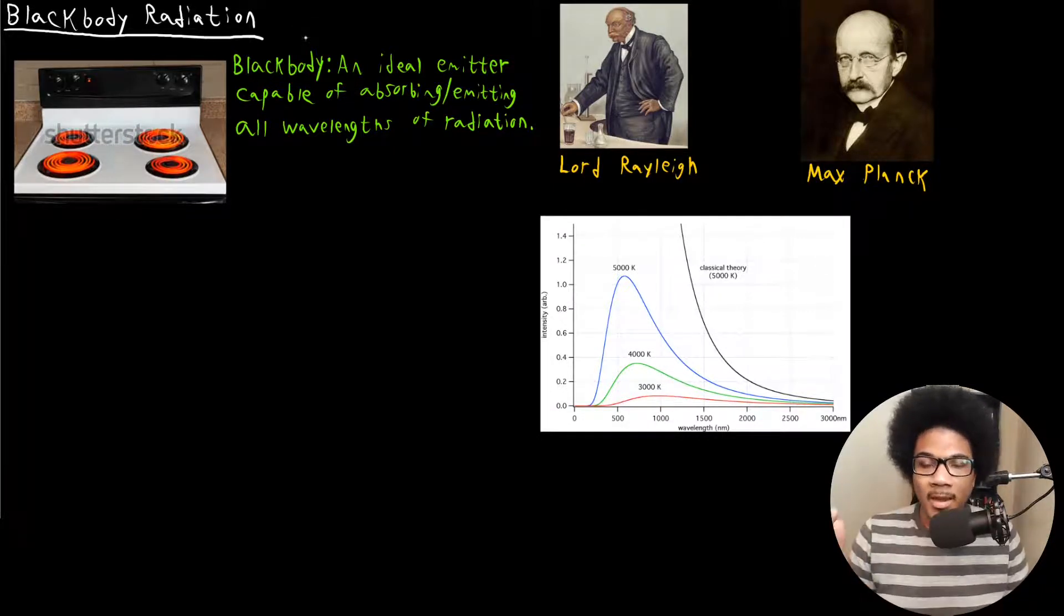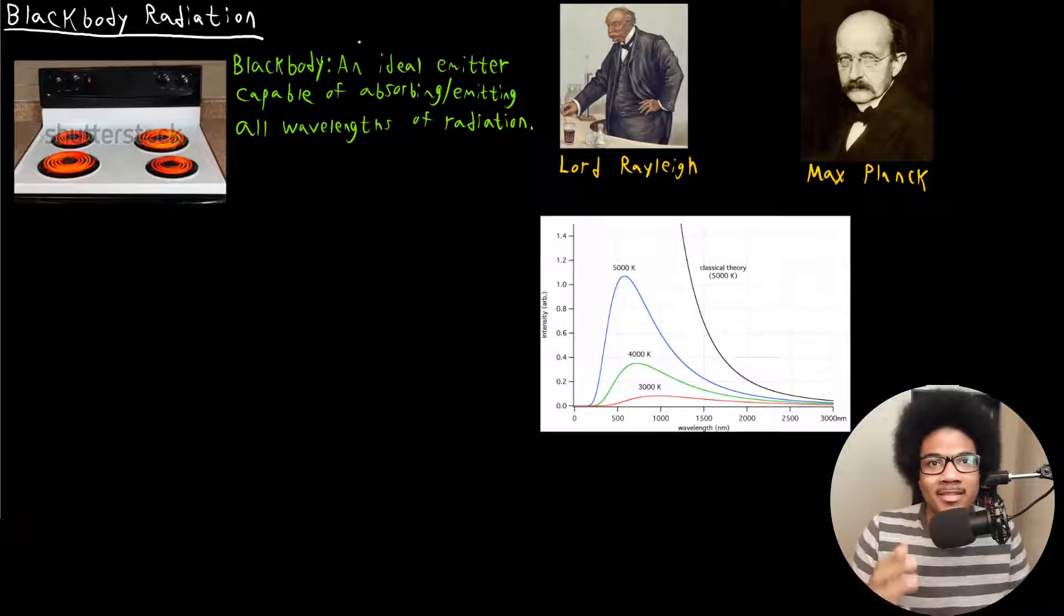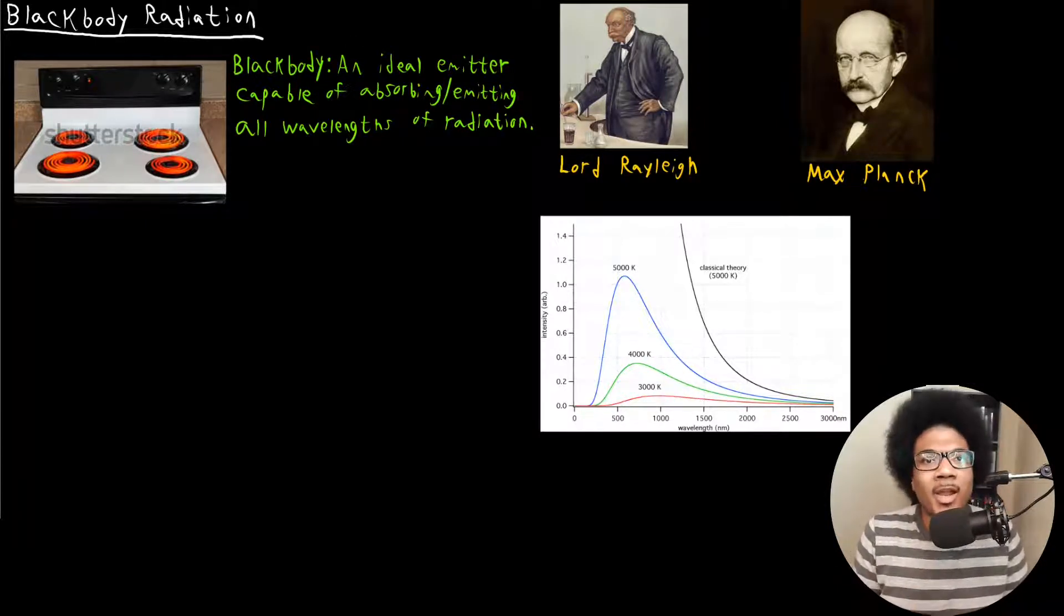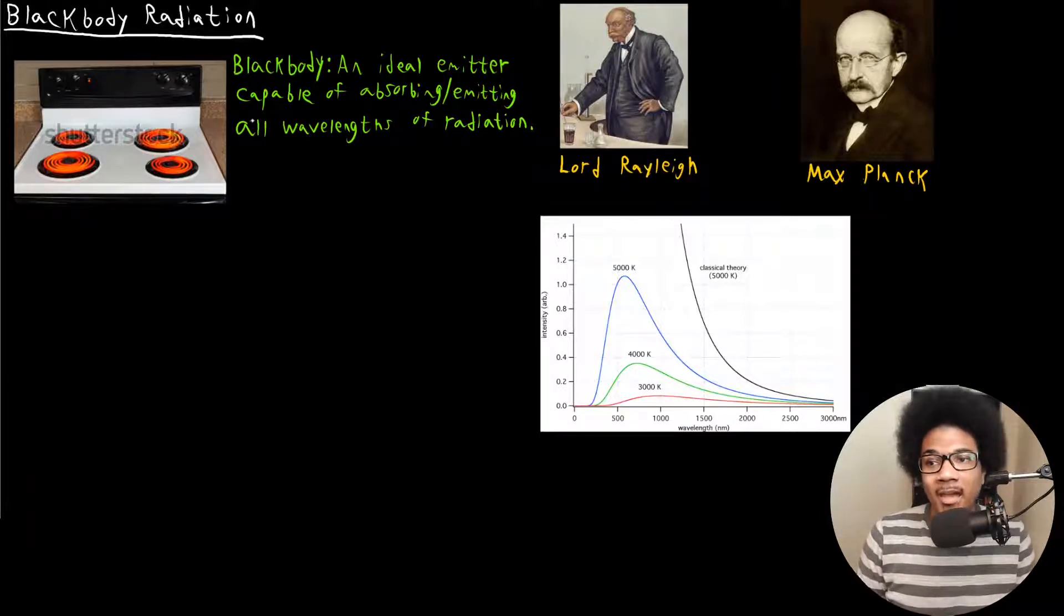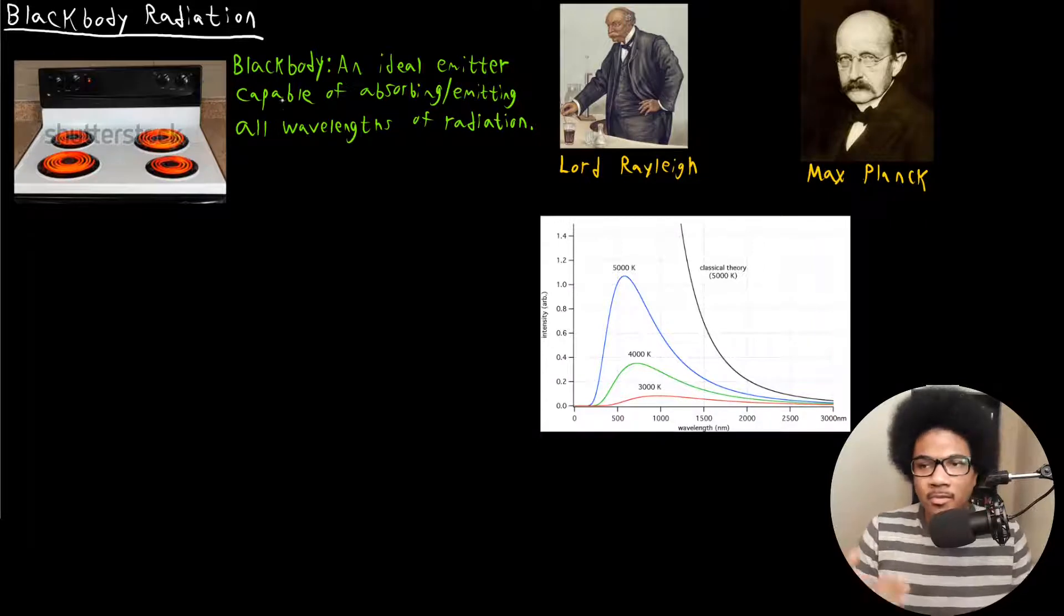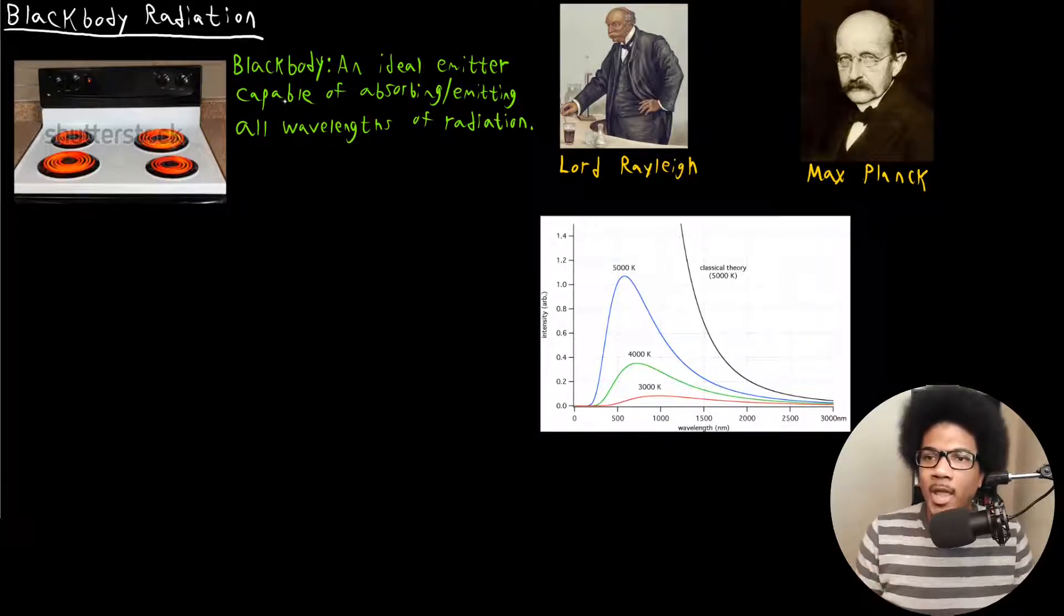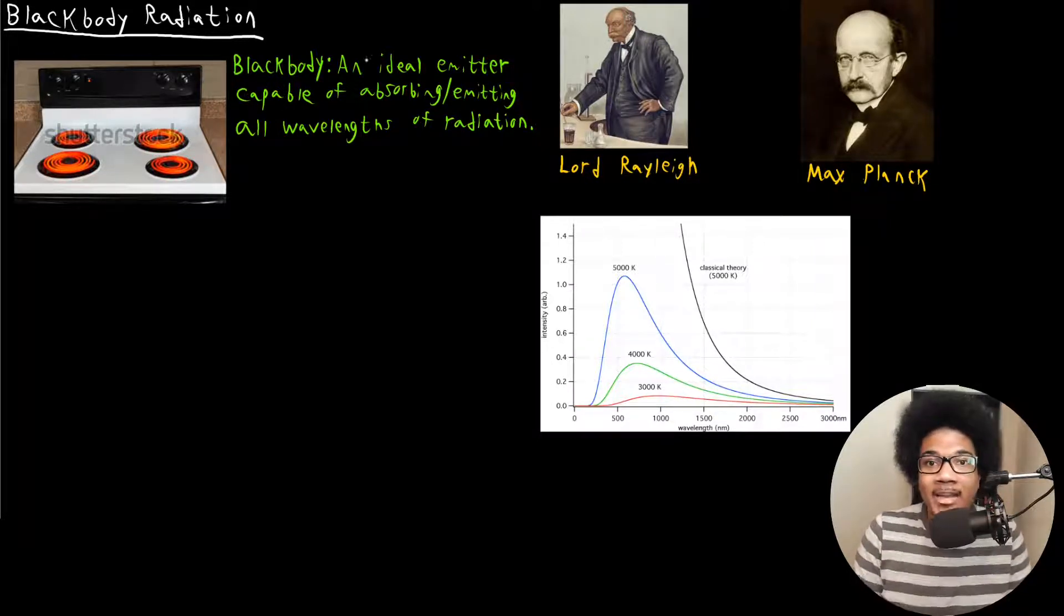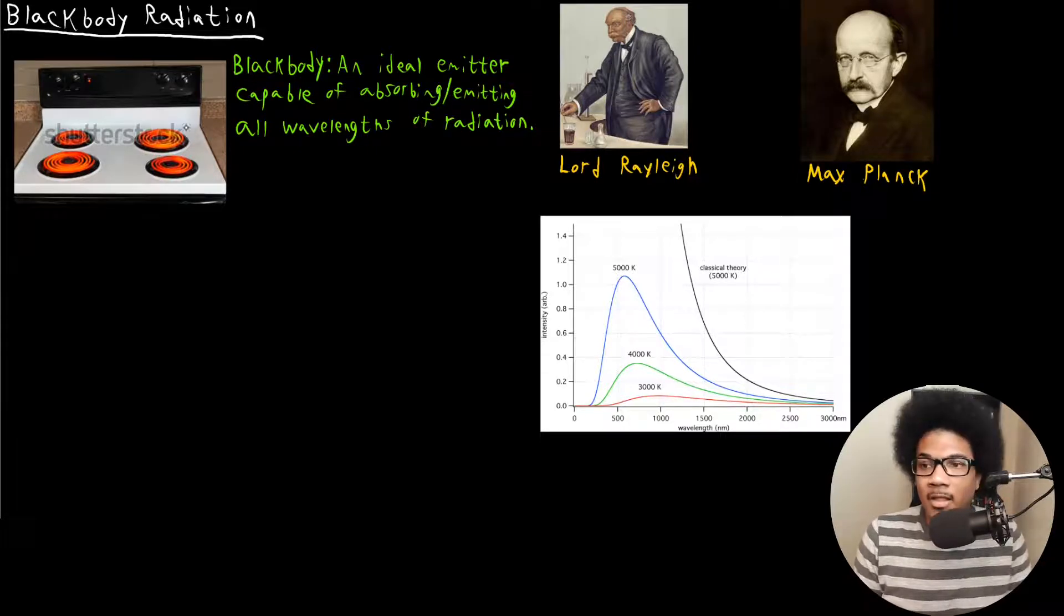What is a black body? A black body is defined as an ideal emitter capable of absorbing and emitting any radiation of light. We see this in practice with hot metal, the best realistic example of a black body, an ideal emitter that we have in actuality.